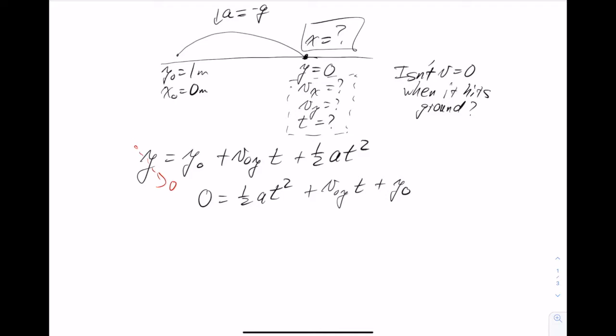And I can label these as, so this coefficient is my capital A, this is my capital B, and this is my capital C for the quadratic formula, right? So the quadratic formula tells me that time